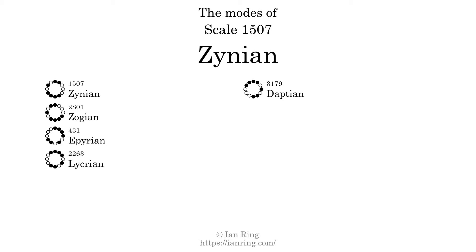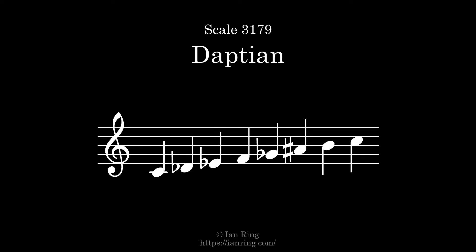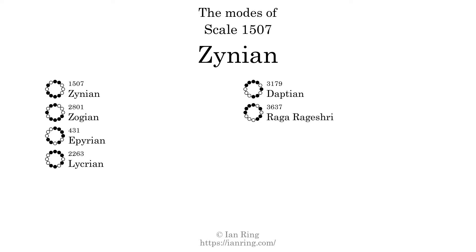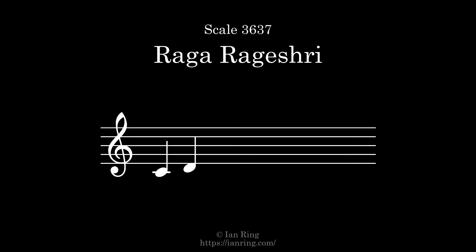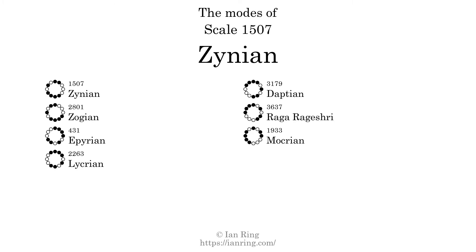The sixth mode is scale 3637, also known as Raga Rajasri. It sounds like this. The seventh mode is scale 1933, also known as Mokrian. It sounds like this.